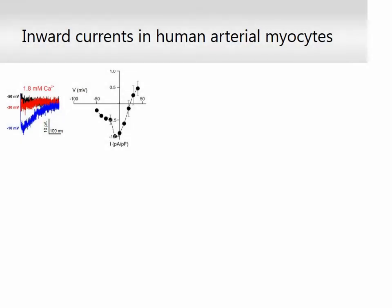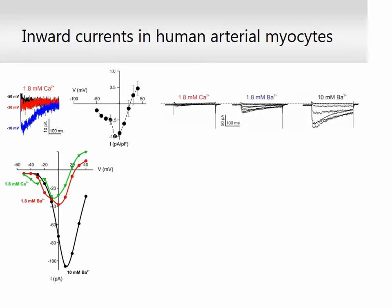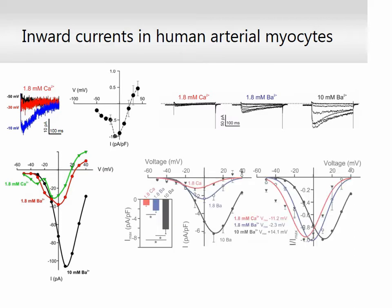Patch clamp electrophysiology using freshly isolated human smooth muscle cells at physiological concentrations of calcium identified an inward current. The calcium current was modest in amplitude and displayed two components suggestive of low and high voltage-activated calcium channels. Using barium as the charge carrier augmented current amplitude and rendered the current no longer divisible into two components. Summary data show that charge carrier replacement was associated with not only amplitude augmentation but also a depolarizing shift of threshold and peak voltages.